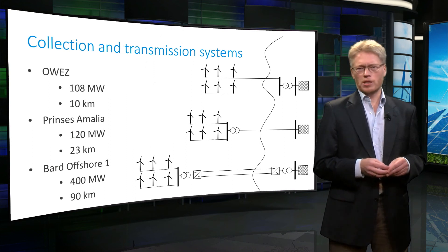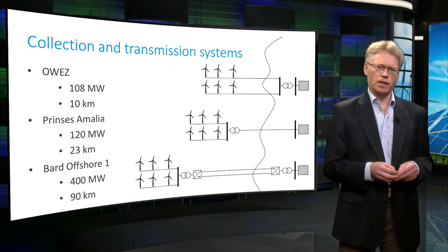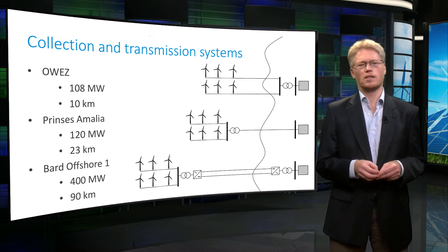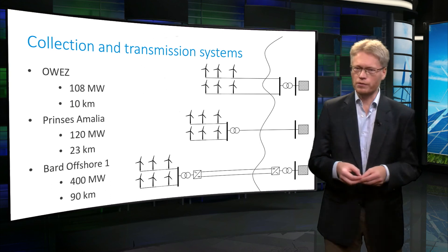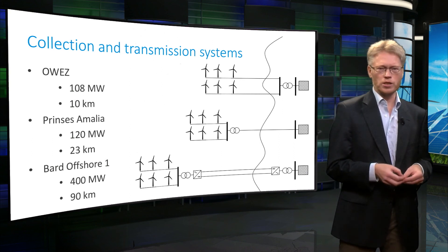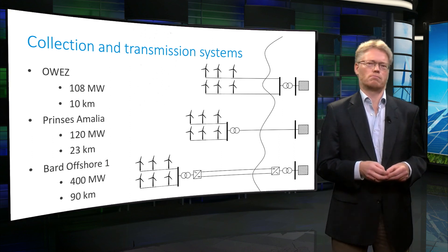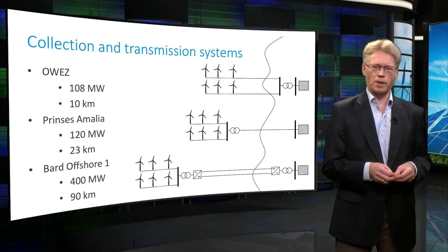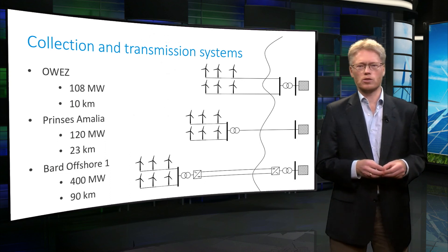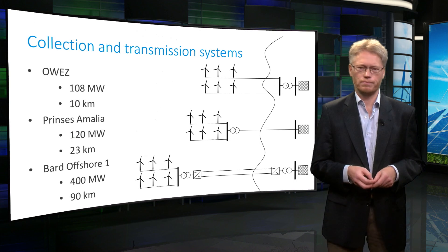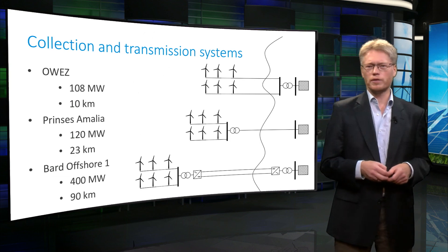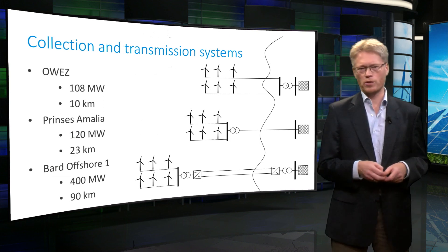The BARD offshore wind farm has a power level of 400 MW, and at 90 kilometers from shore it can be classified as far offshore. In this case, after the power collection, the voltage level is not only increased but also converted from AC to DC using power electronics. The reason to use direct current for the power transmission is that using AC at long distances is not feasible because of the large reactive power consumption of the cables. Because the offshore power system does not yet exist, a lot of research is done to investigate what the best offshore power system would look like.